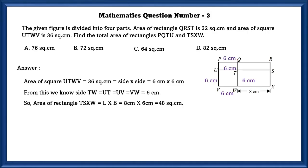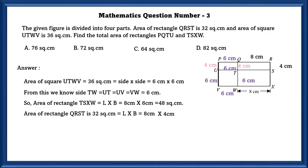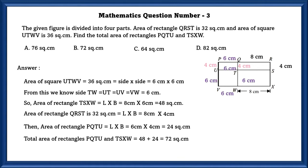Area of rectangle TSXW is equal to L × B, that is 8 × 6 centimeters, which is equal to 48 square centimeters. Here, 8 is already given. Area of rectangle QRST is 32 square centimeters, equal to L × B. The length is 8 centimeters, so breadth is equal to 4 centimeters. Area of rectangle PQTU is equal to 6 × 4 = 24 square centimeters. Thus, total area of rectangles PQTU and TSXW is 48 + 24 = 72 square centimeters.